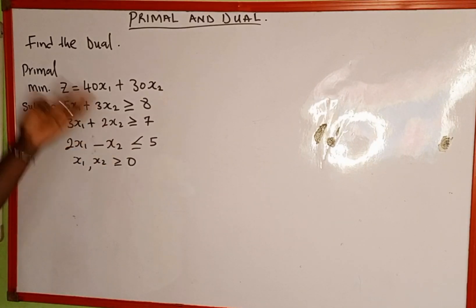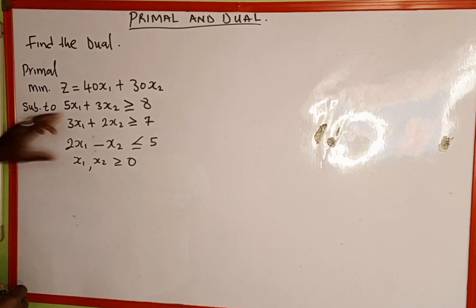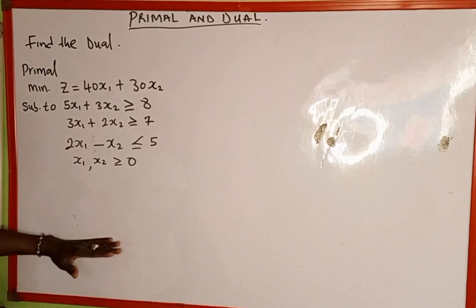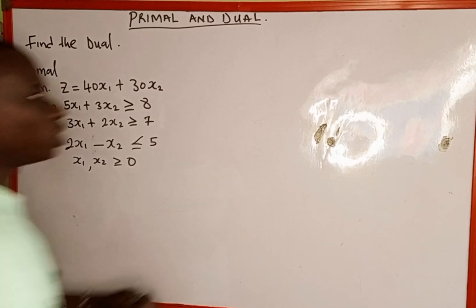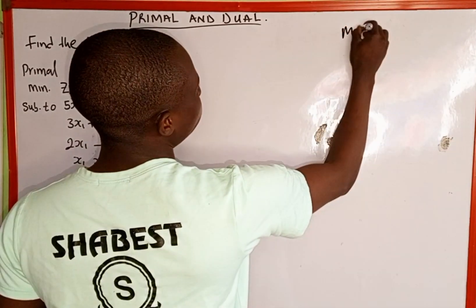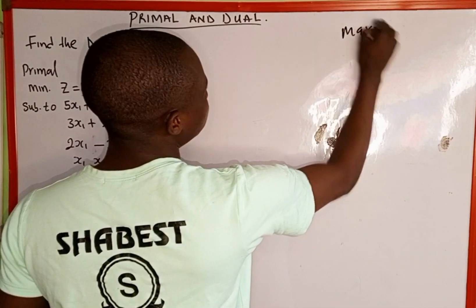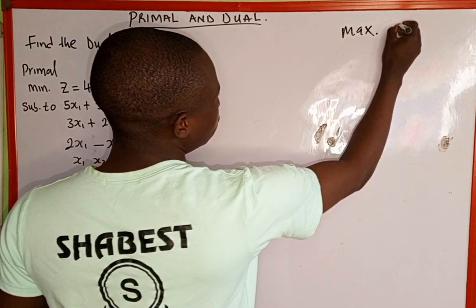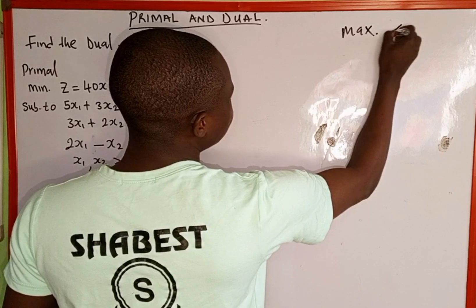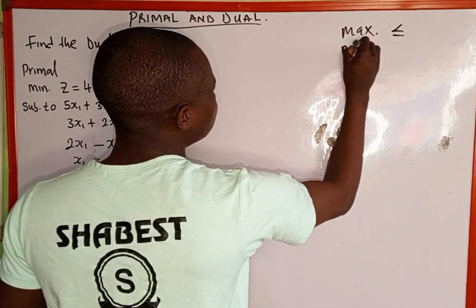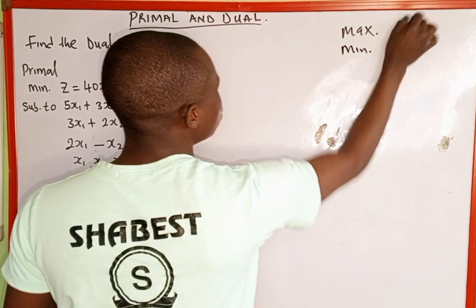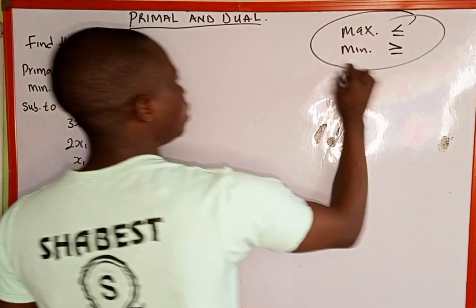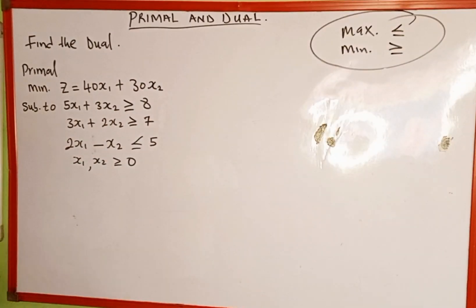This is a primal we are going to convert into duality form. Now to convert this problem from primal to dual, the first thing we are going to do is to record two conditions. The first condition is: if the problem given is in maximization form, the constraints are going to be less than or equal to; and if it is minimization, they are going to be greater than or equal to.